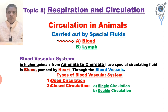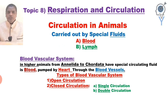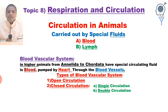Now, the blood vascular system — from annelids to chordates, there is a special circulating fluid called blood. The blood is pumped by an organ called the heart, which is called the pump organ.